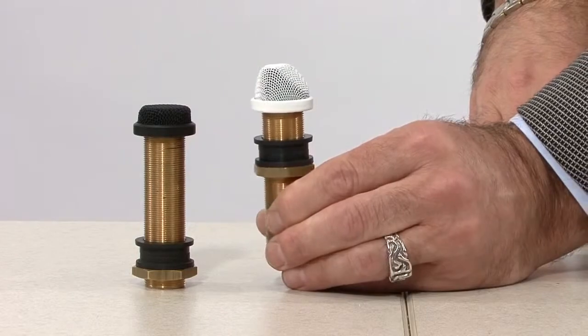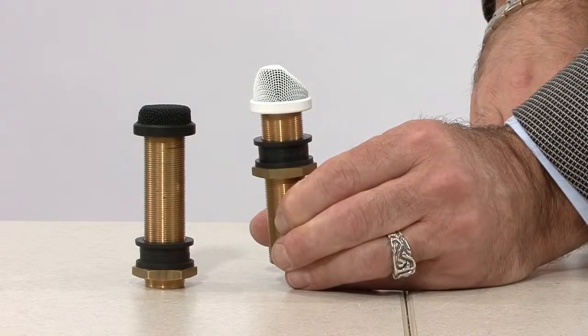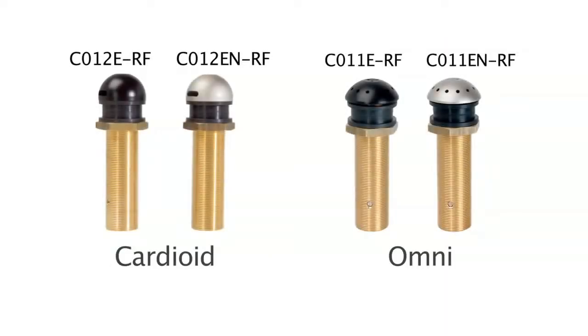This is obviously very popular for conference tables. Our next two alternatives are the C011 and C012, an omnidirectional pattern and a cardioid pattern.